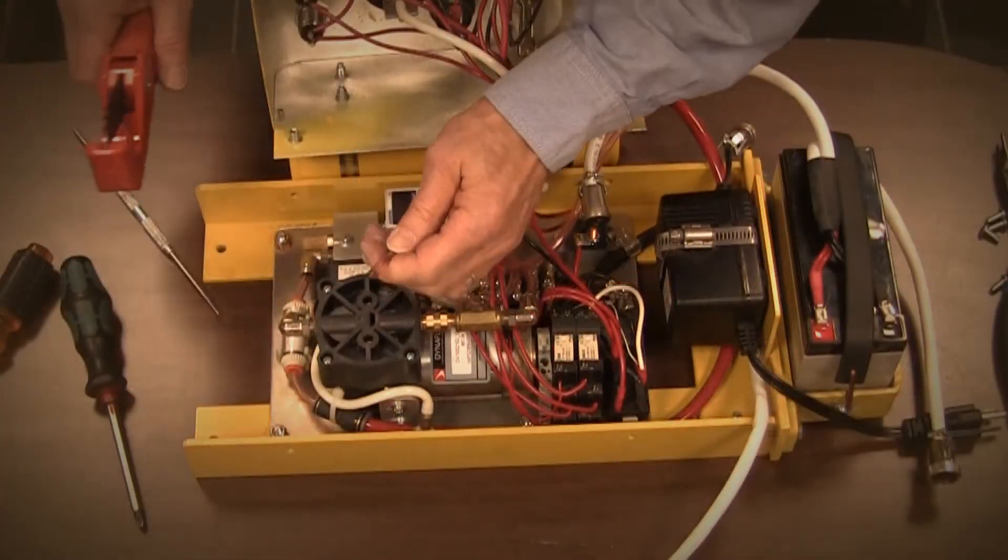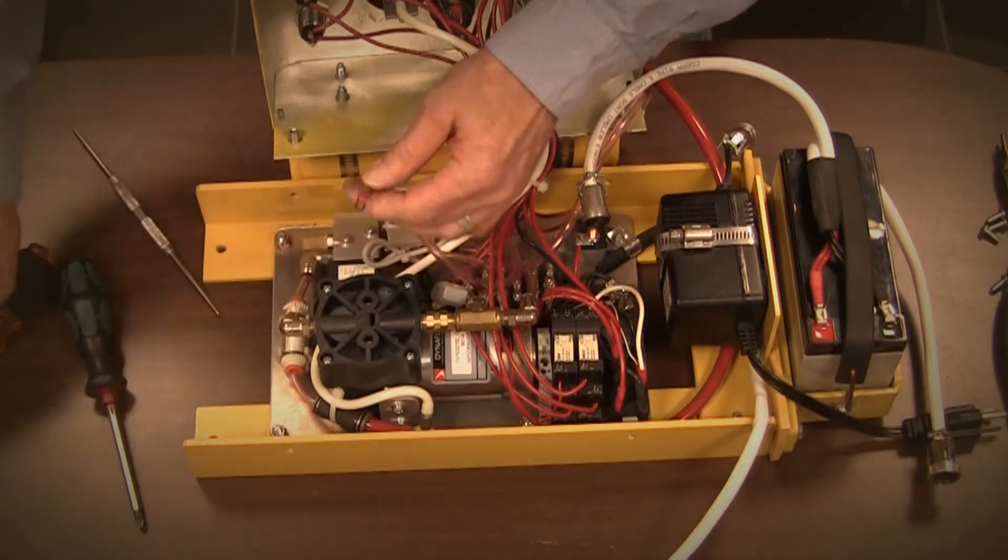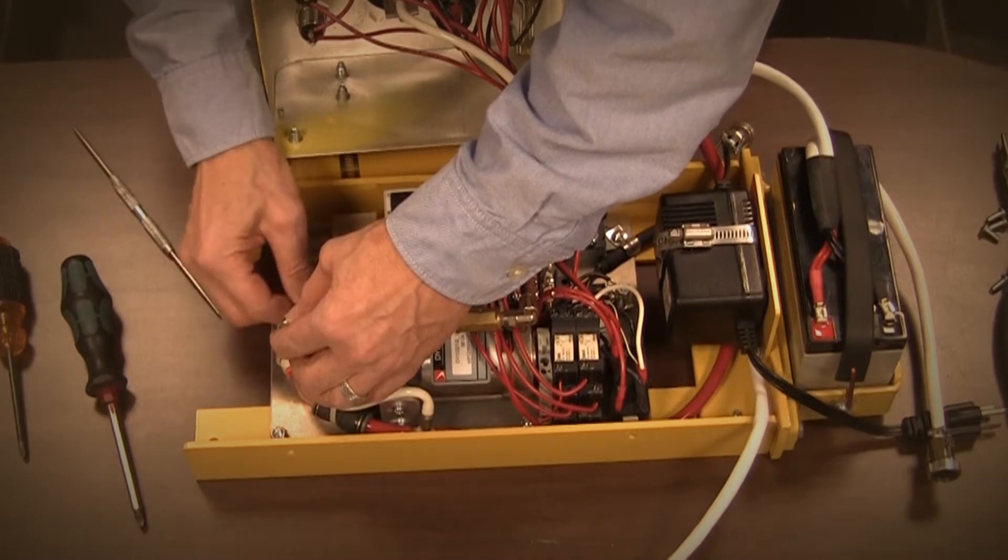Cut a small portion off the end of each hose to remove any damaged or distorted section, then reattach the hoses in their original locations.